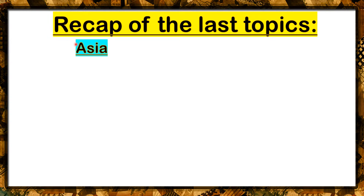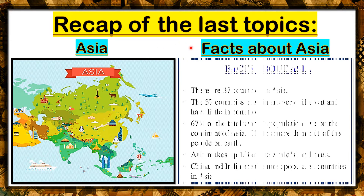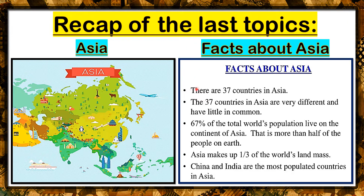So the first topic is Asia. Asia is the largest continent in the world. Facts about Asia: there are 37 countries in Asia, and these 37 countries are very different and have little in common. 67% of the total world's population live on the continent of Asia — that is more than half of the people on Earth. Asia makes up one-third of the world's land mass, and China and India are the most populated countries in Asia.